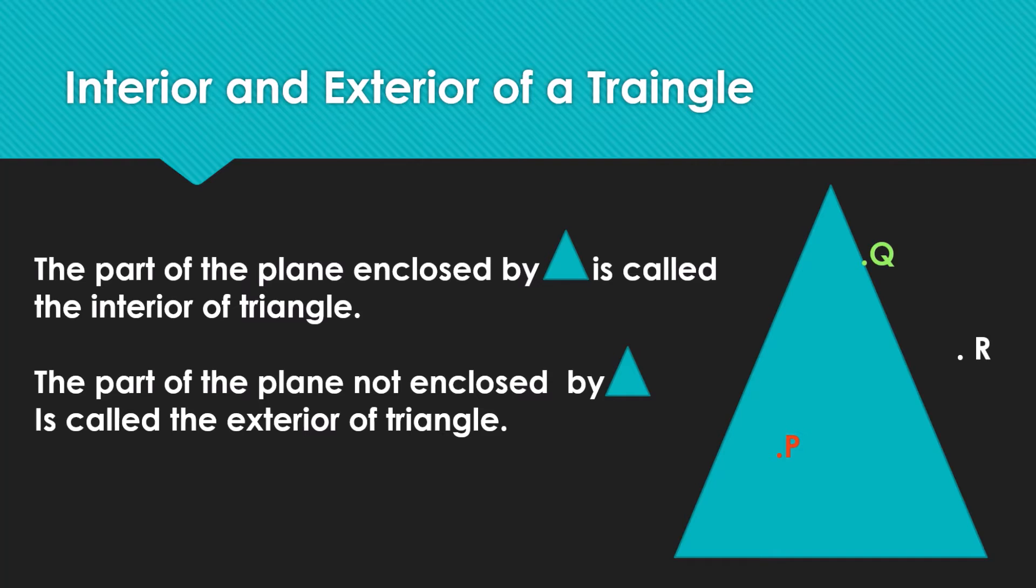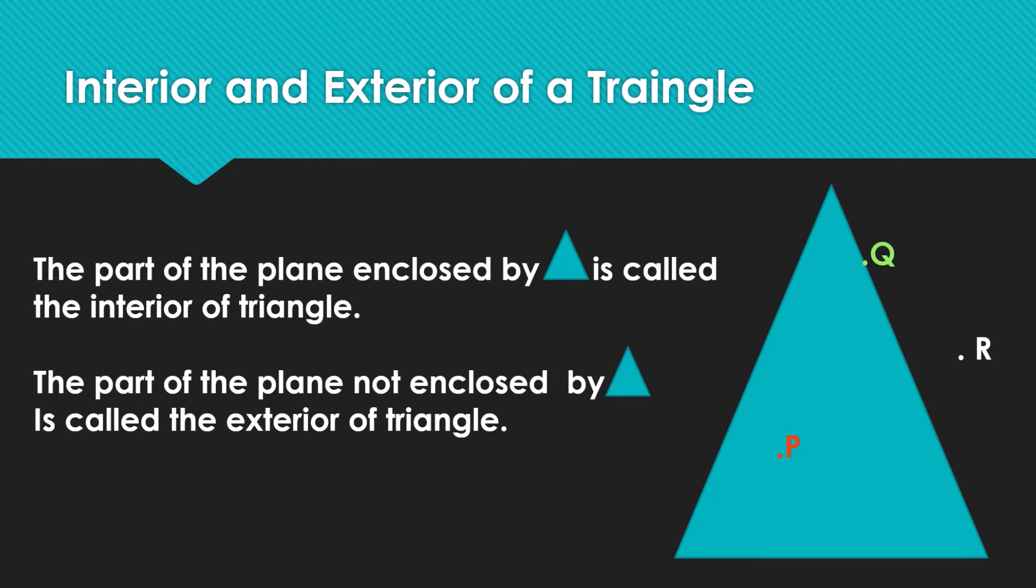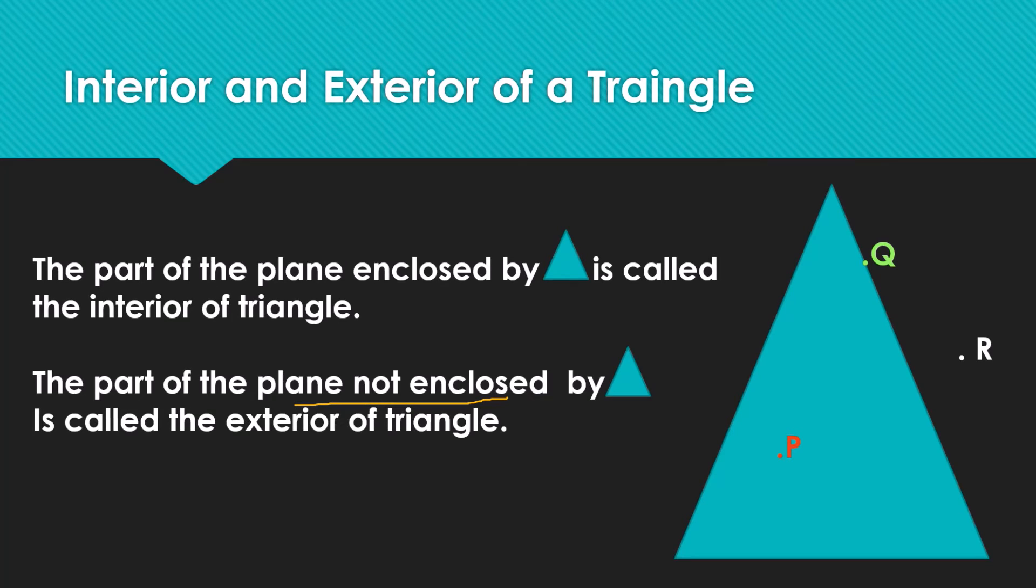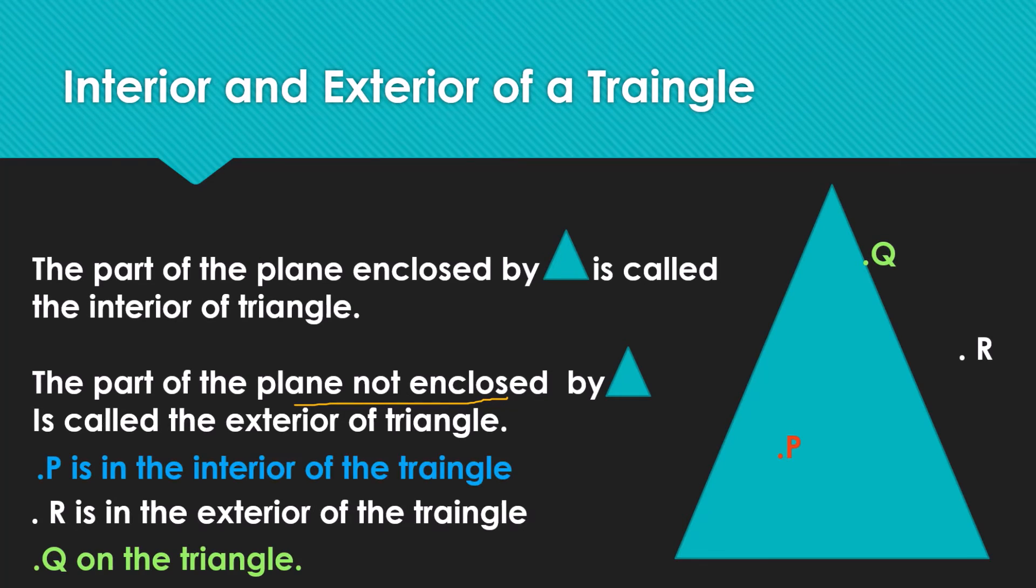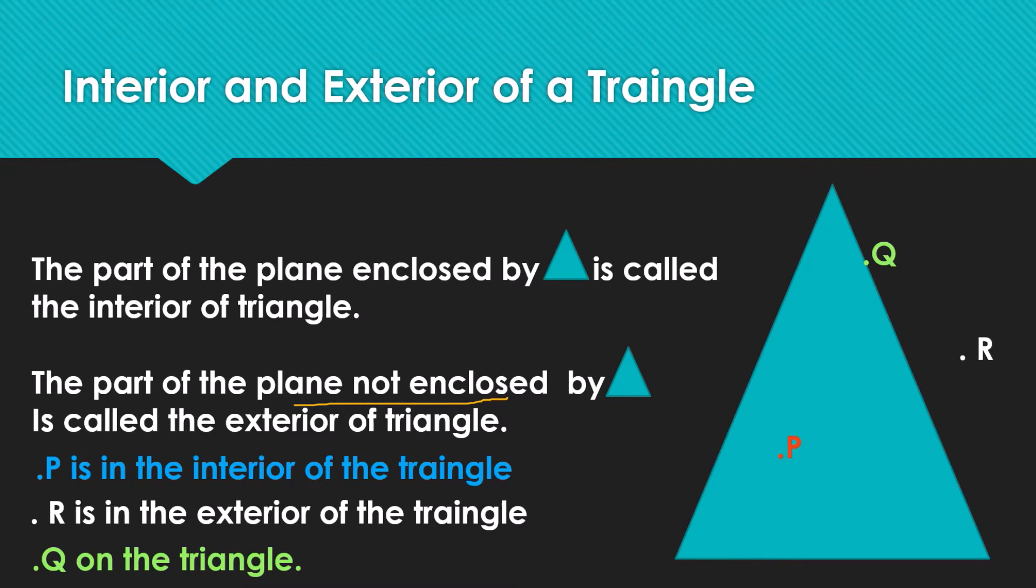Being a polygon, a triangle has an exterior and interior. The part of the plane enclosed by the triangle is called the interior of the triangle, and the part not enclosed is called the exterior. From this figure we can find that point P is in the interior, point R is in the exterior, and Q is on the triangle.